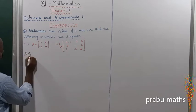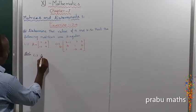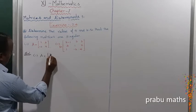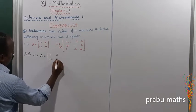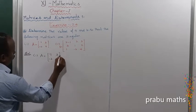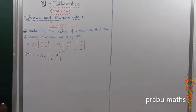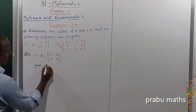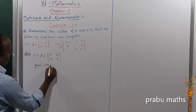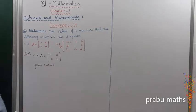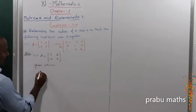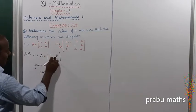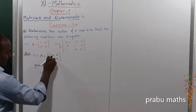The first subdivision: A is equal to the matrix [7, 3; -2, A]. That is the first subdivision. Given that the determinant of A is equal to 0, the determinant of A is equal to the first multiplication: